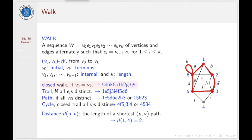We call W a closed walk if V0 equals VK. This is the example. The red one is a closed walk from 5 to 5. So we go this way, and then this way, and then we go to 1, we go to 2, 3, and 5.